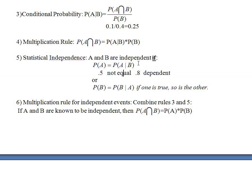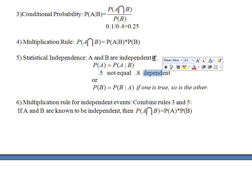Dependent simply means that 50% of the people at a party are accountants, but 80% of the boys are accountants. So the probability that someone is an accountant depends on whether they're a boy or not. Dependent means knowing B tells you something about the chance that someone is A. Independent means knowing B does not change the probability of being A.